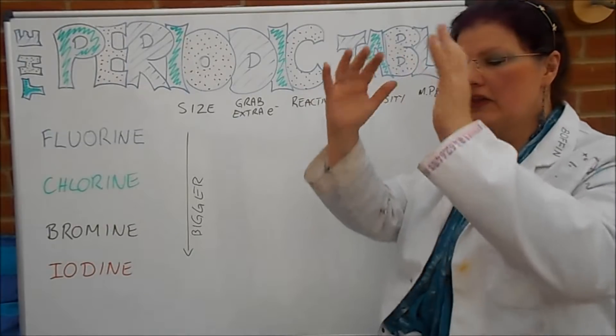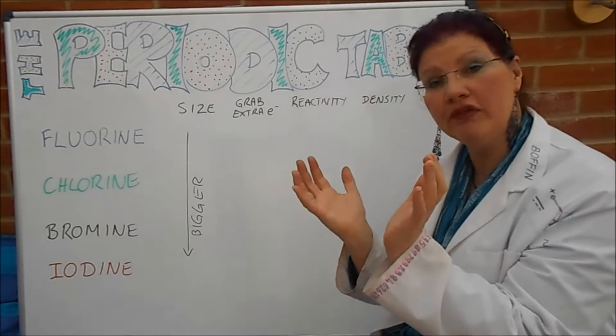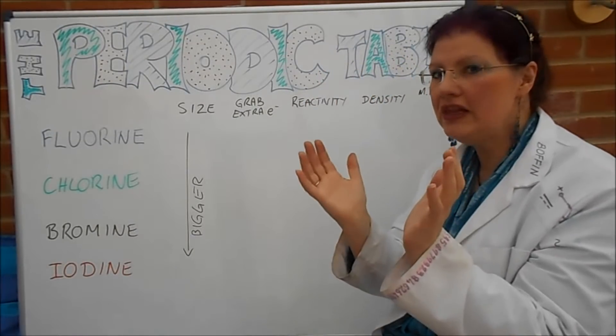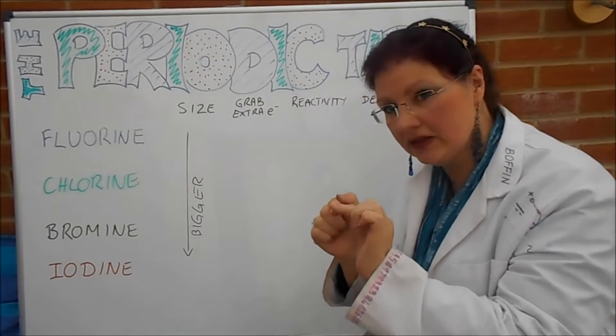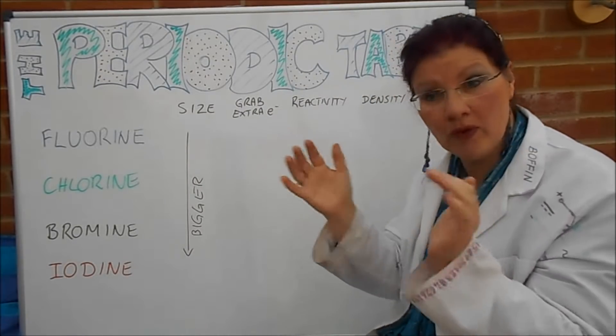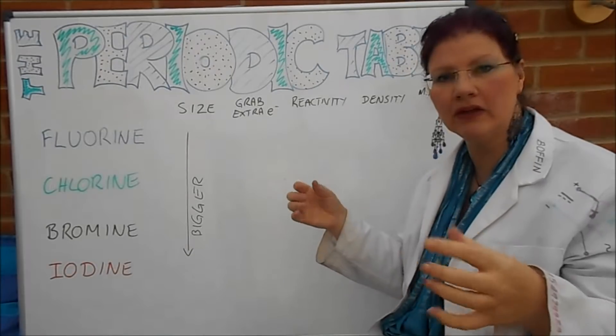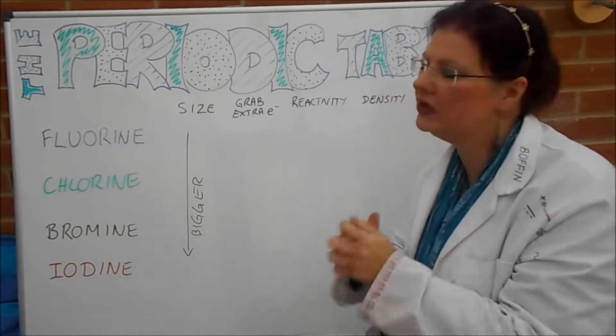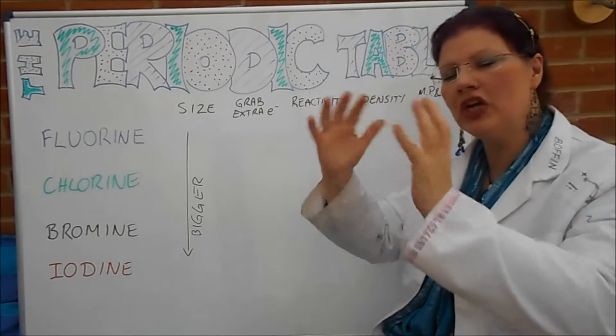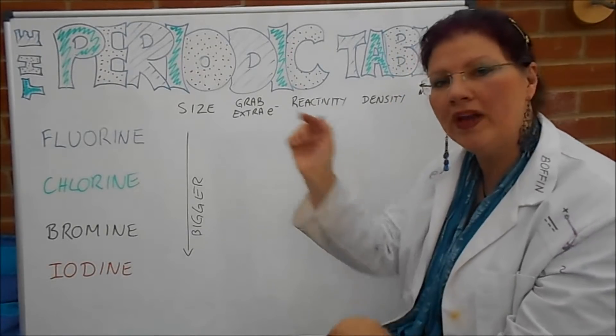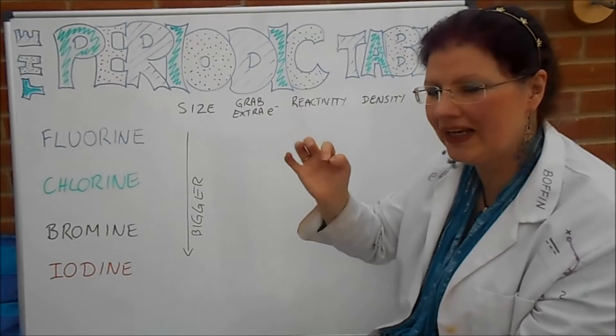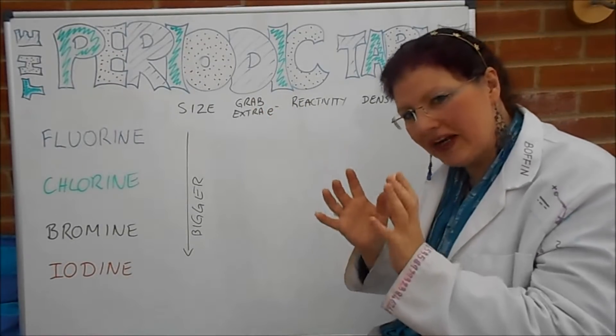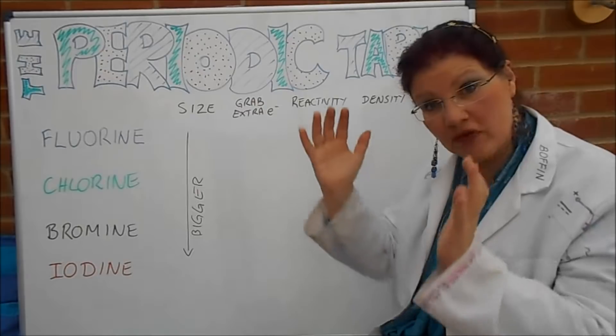Iodine, on the other hand, the outer shell's quite a lot further away. So the electrons in there are not so strongly attracted to the centre because they're further away and the attraction diminishes, like with magnets. If you hold two magnets far apart, the attraction isn't so much as if you hold them close together. So the outer shell on iodine, where you're trying to attract that extra electron, is not so much attracted to the centre because they're further away.